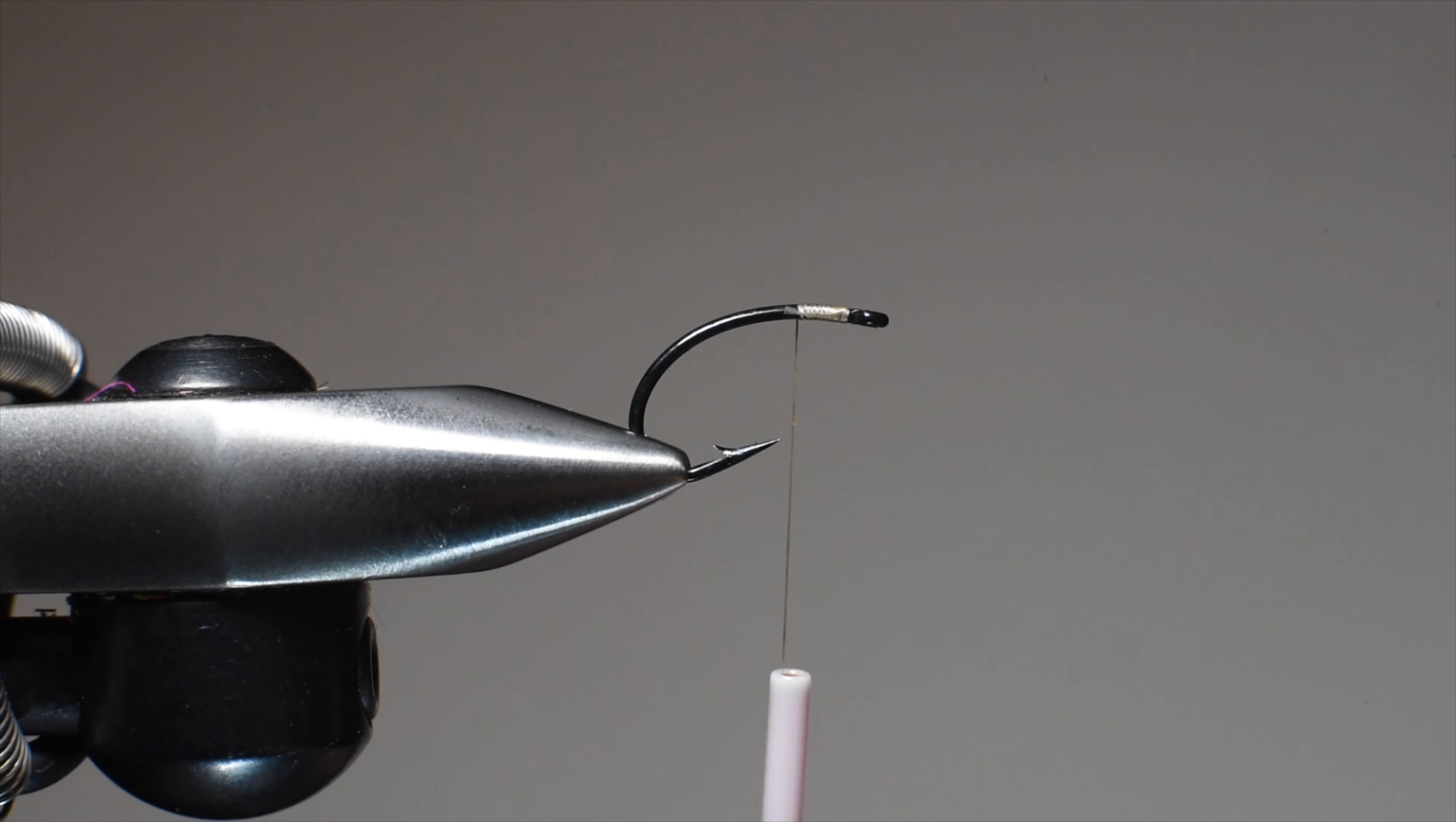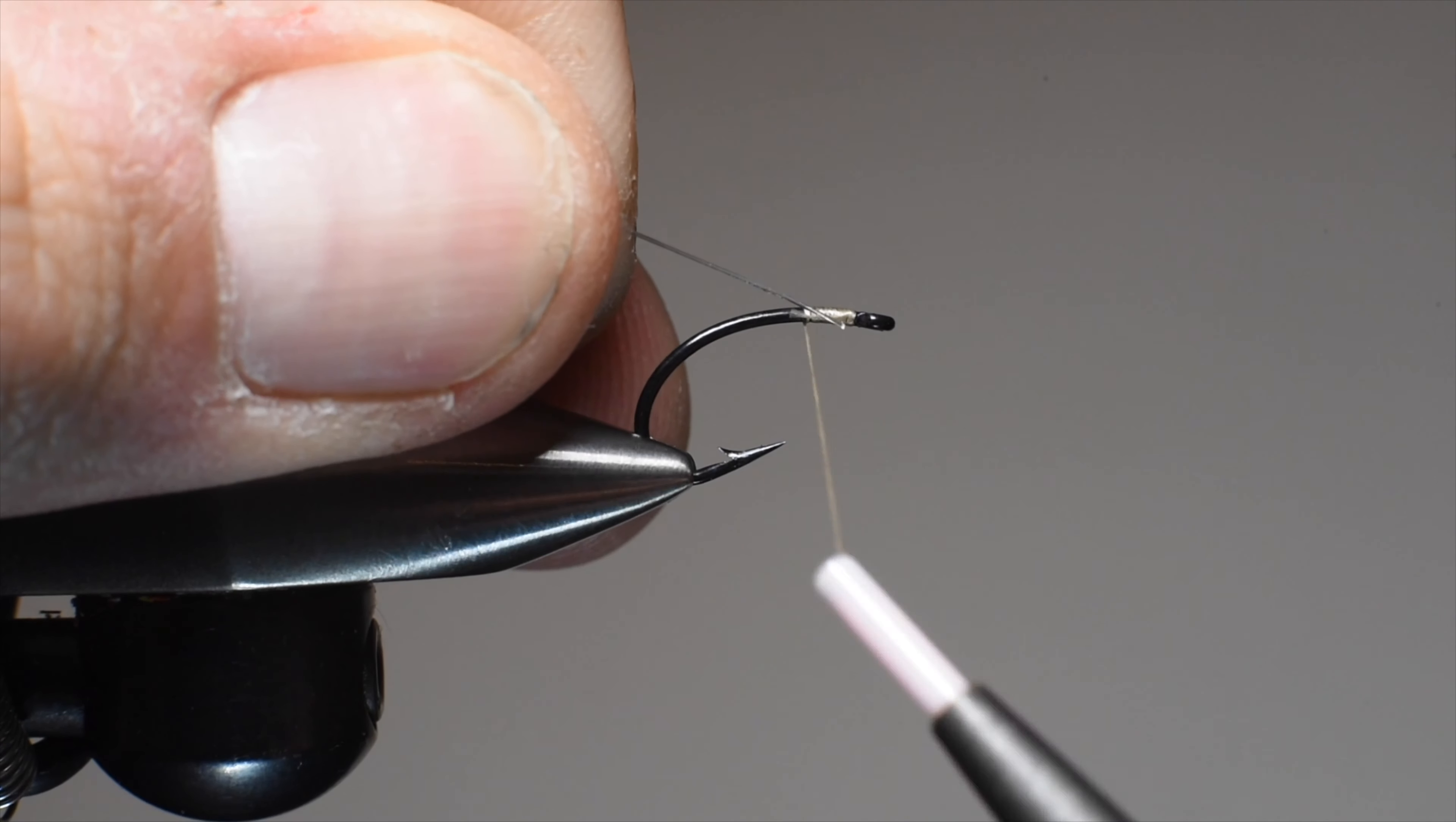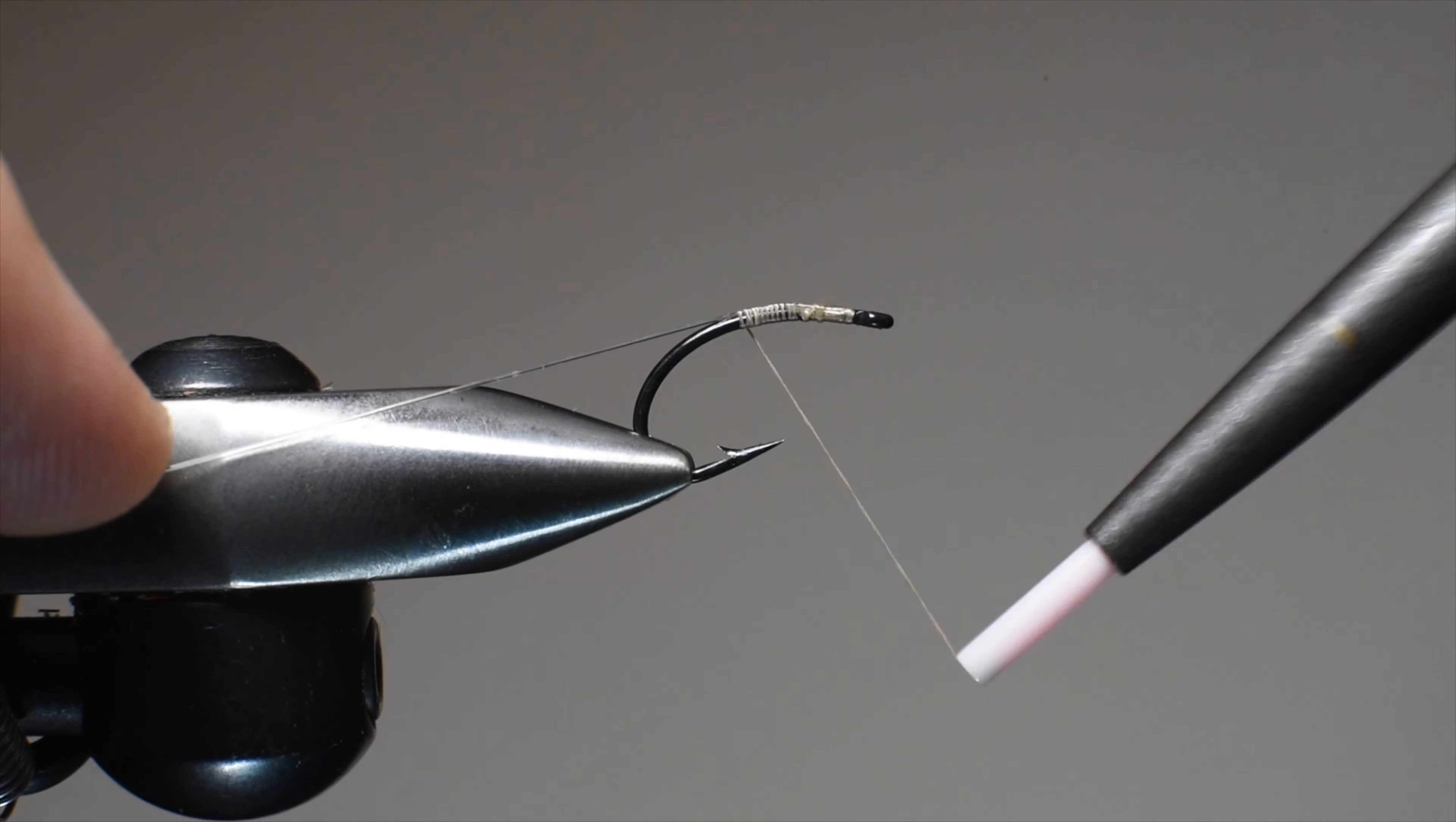We'll go ahead and start our thread. Just like the Heavy Hitter, we're going to be using some 3X tippet. This is just some old stuff I had from a couple years back that I use for ribbing now. We'll tie in a four to six inch section, whatever is easiest for you, and keep that on the top of the shank.